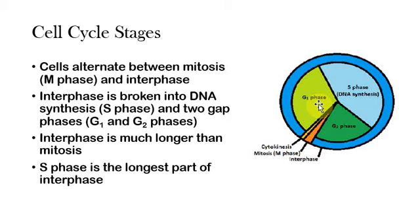This is where it's performing the function it's supposed to do. For example, a muscle will be contracting, a nerve cell will be sending impulses. So G1 and G2 are much more than a gap in the cell cycle. They're where a lot of the work happens.